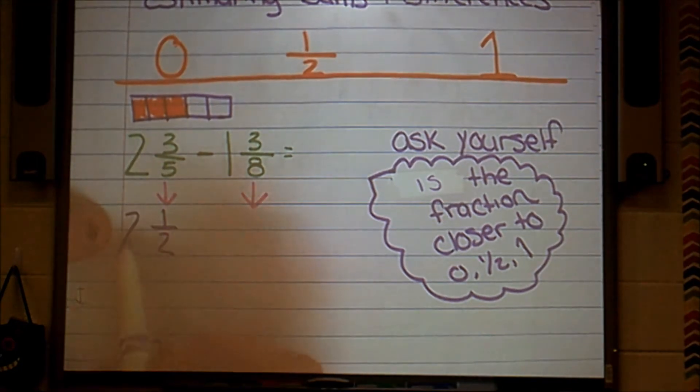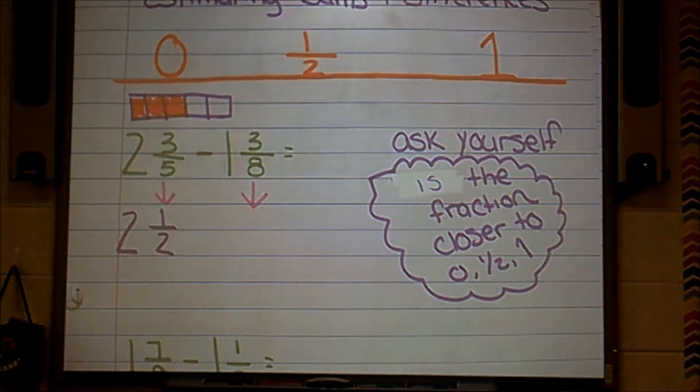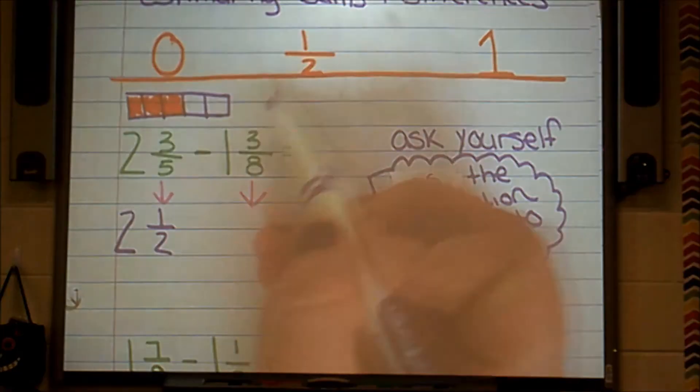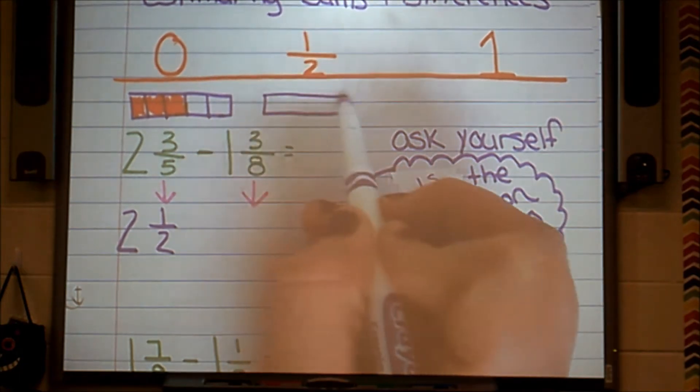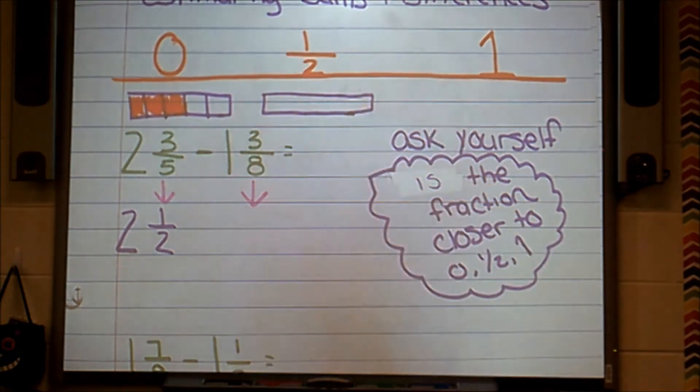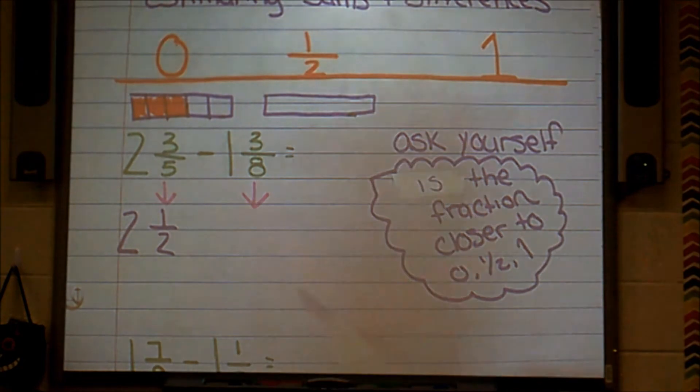And then I bring down my whole number, because I'm not rounding my whole number. I'm not estimating with my whole number. I'm just estimating my fraction. I'm going to do the same thing for my 3 eighths. I'm going to draw a fraction bar. And I'm going to cut it into eighths.